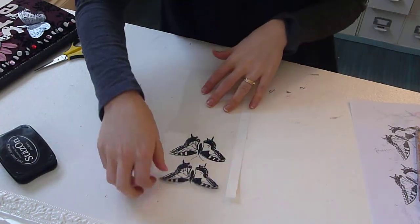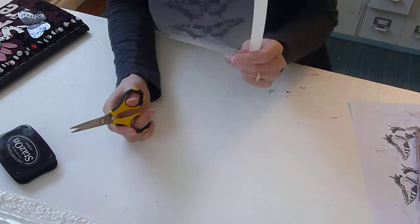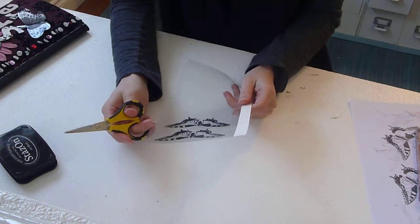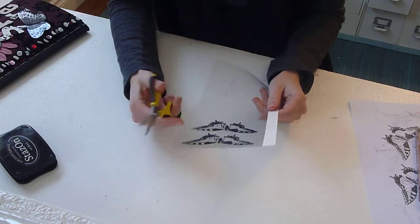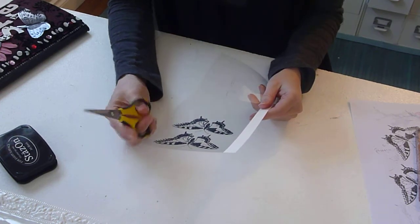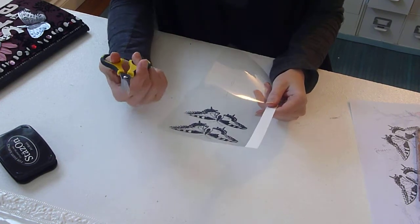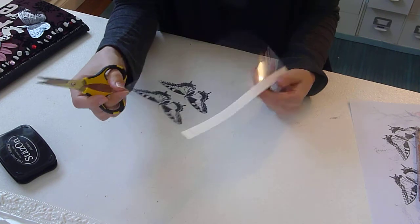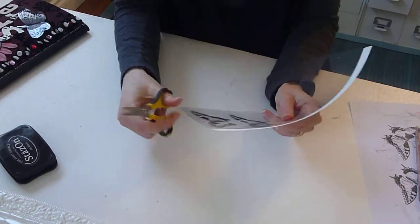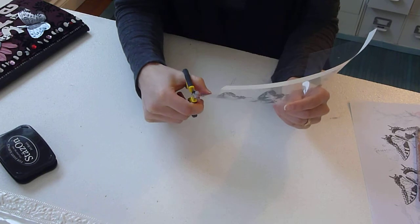Now, to cut them out, you want to be pretty detailed for it to look the best. You don't have to be. But I suggest a pair of scissors like these. I love them because of the pointy tip. So, you can just cut away.